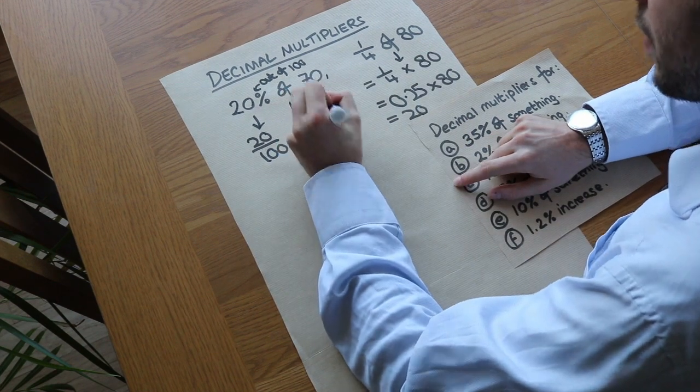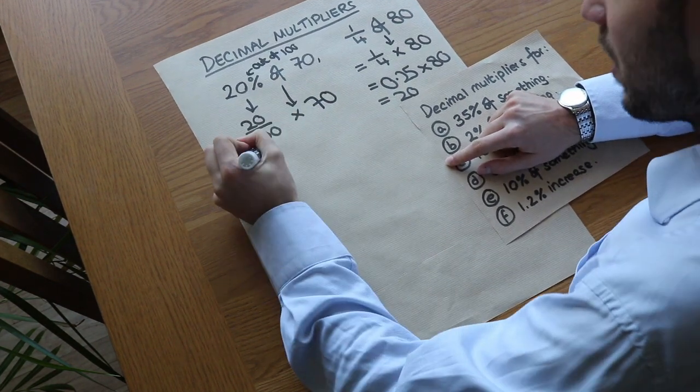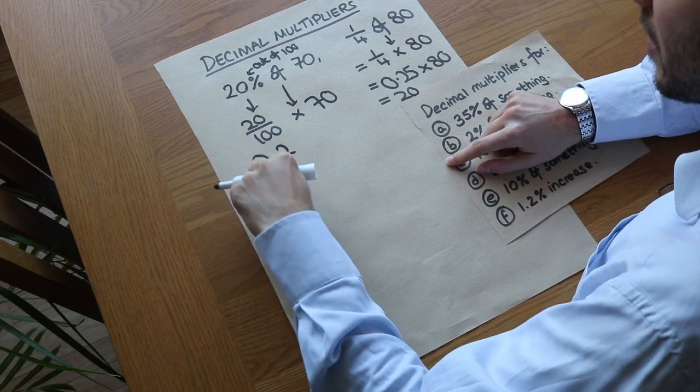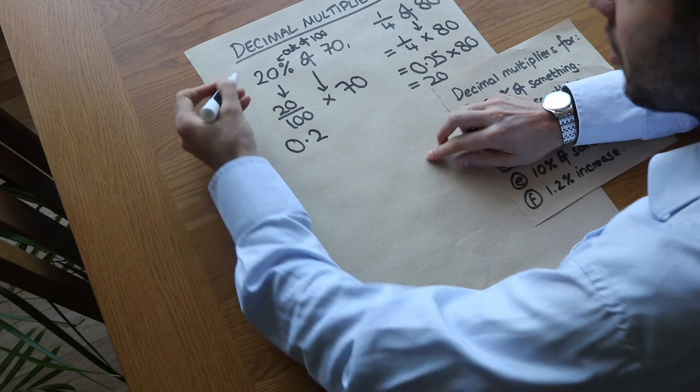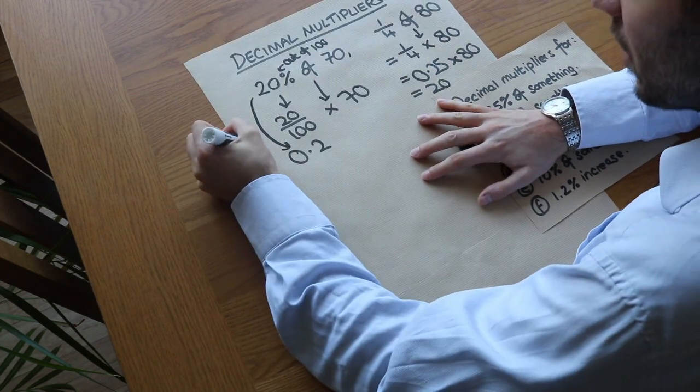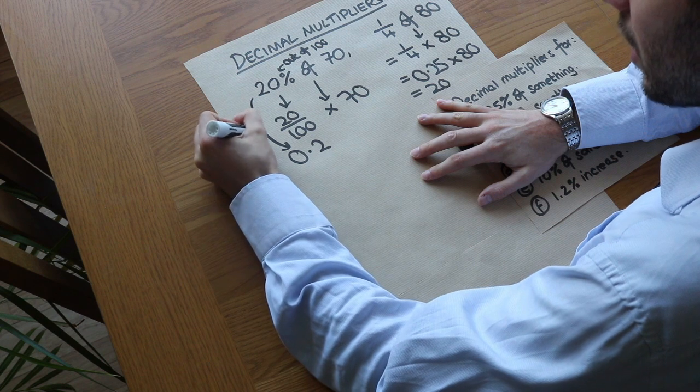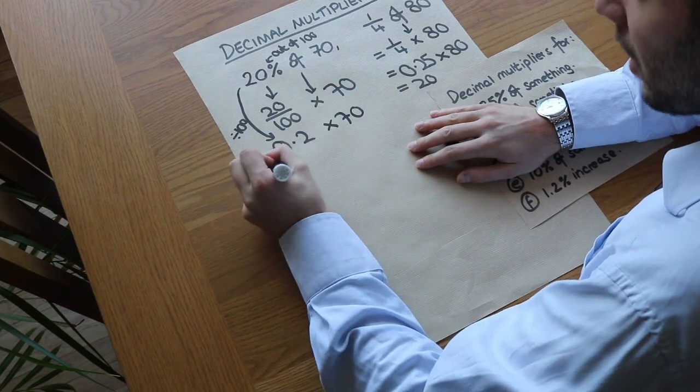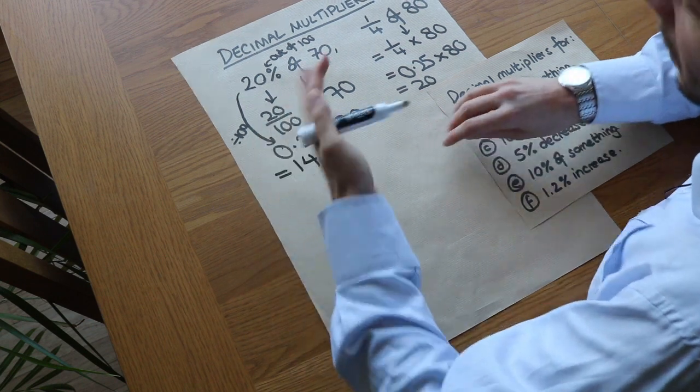Now 20 over 100 we can also write as a decimal as 0.2. Just remember, to convert from a percentage to a decimal, we divide it by 100. So you've now got 0.2 times 70, which gives us 14. We'll be looking at percentages of amounts and the different approaches we can use in another video.